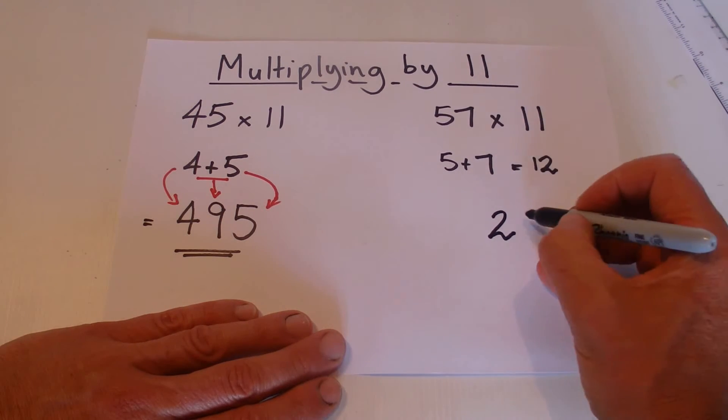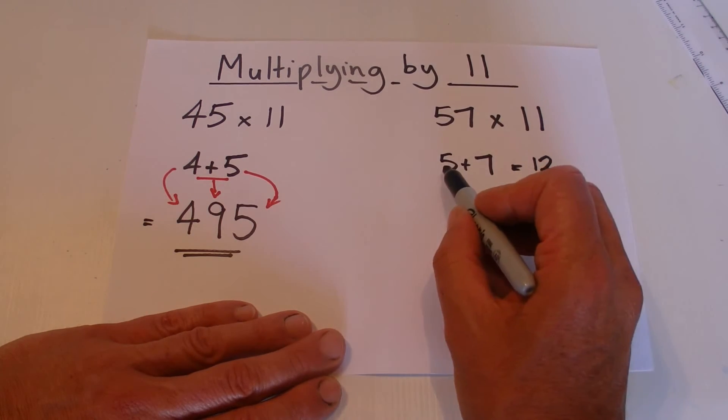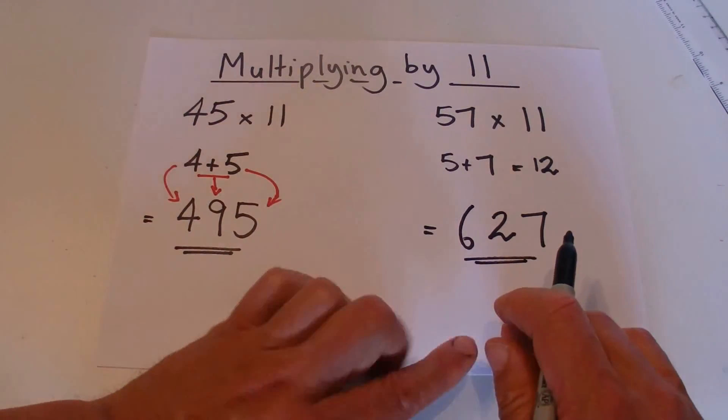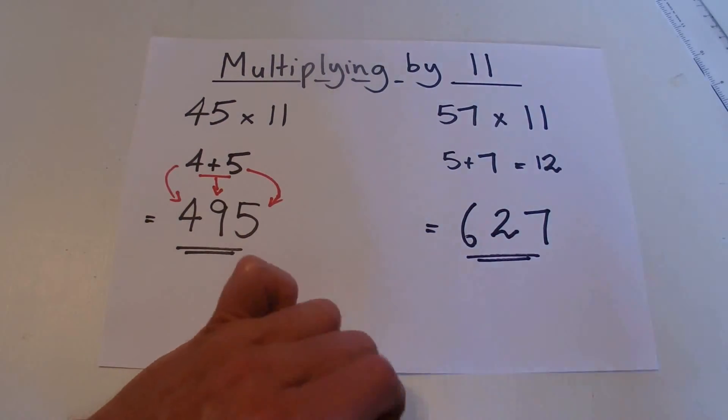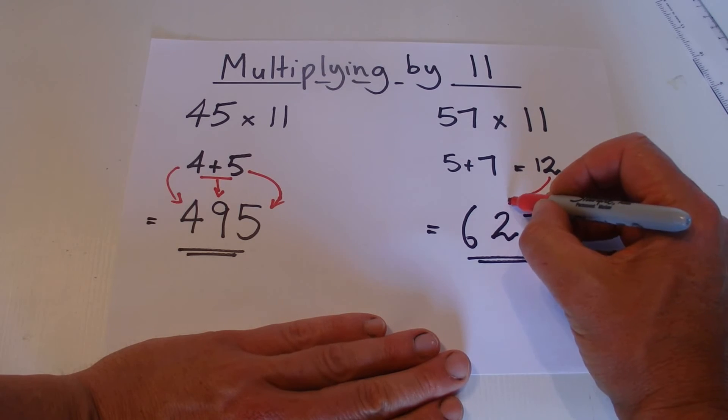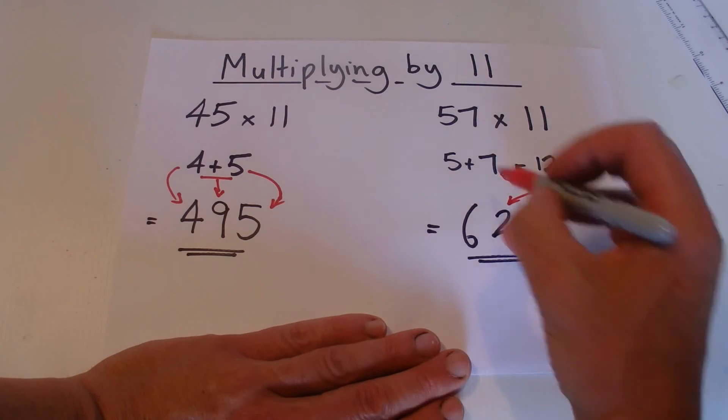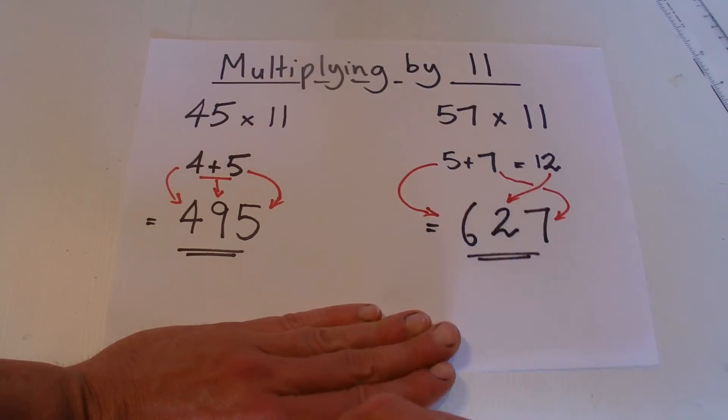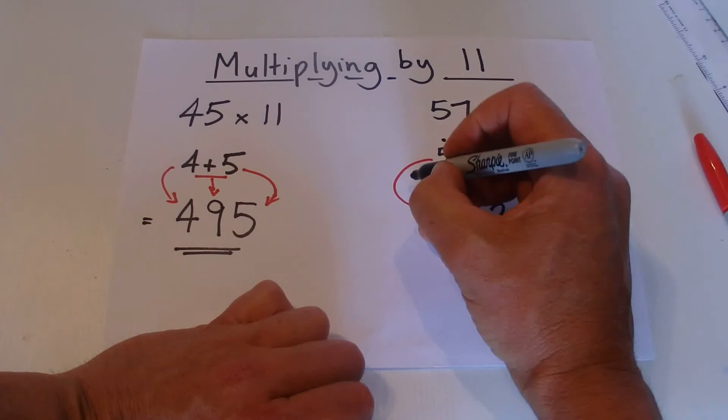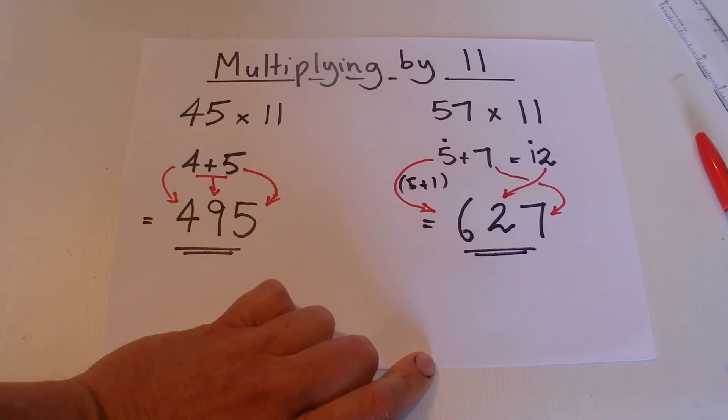You still pick up the 7 from the 57, that goes there on the right hand side, but rather than putting the 5 on the left hand side, you put the 5 plus the 1, which is 6, and you come up with the answer of 627. So 57 times 11 is 627, so it's still the same principle. 5 plus 7, and the 2 goes in the middle, the 7 still goes on the right hand side, but when you come to the left hand side, it's not the 5, it's the 5 plus the 1, which gives you the 6, and the answer is 627.